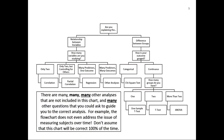Going back to our decision chart, we're still on the right side explaining differences between groups. We still have a continuous outcome — something we measured like height, performance, or job satisfaction — and now we have more than two groups, so we're going to be doing an ANOVA.